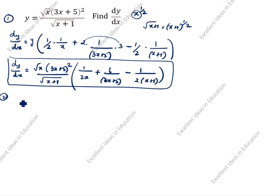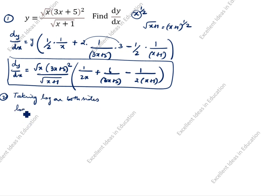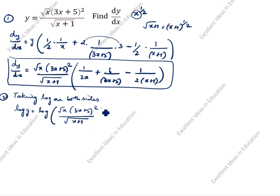Second method: we will take log on both sides. So in the given question, log y is equal to log of open bracket root x times (3x + 5) whole squared divided by root of (x + 1) close bracket. We will split this one.